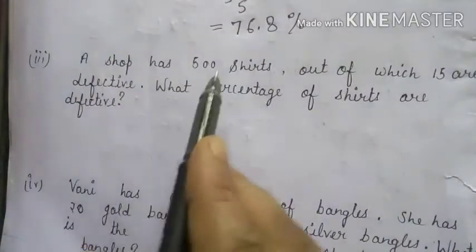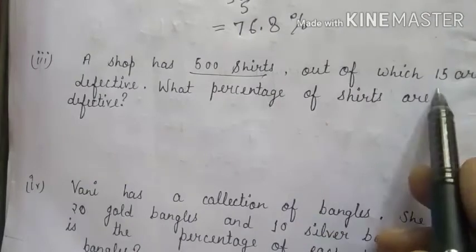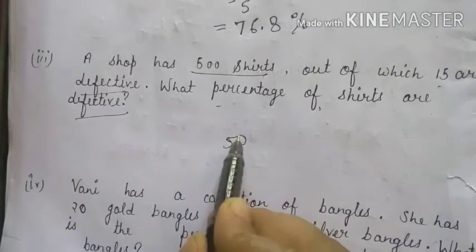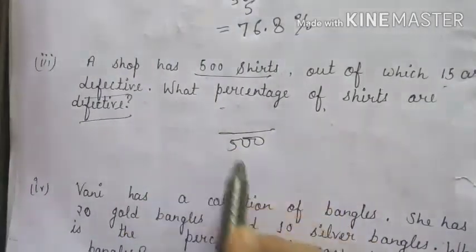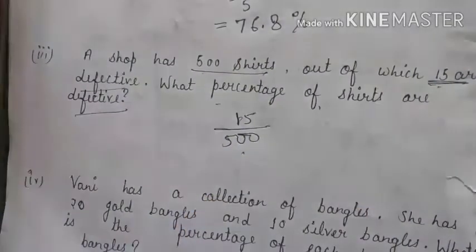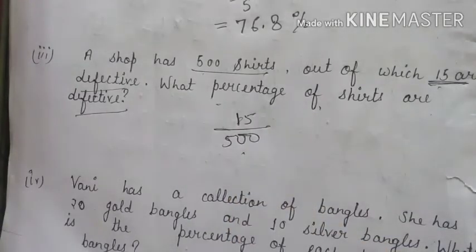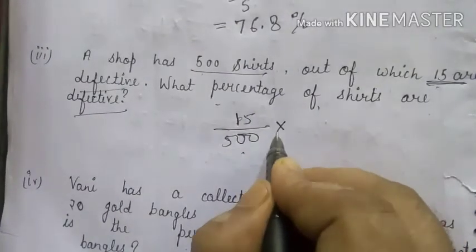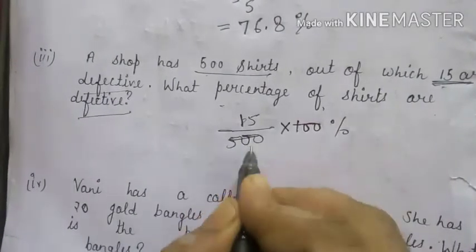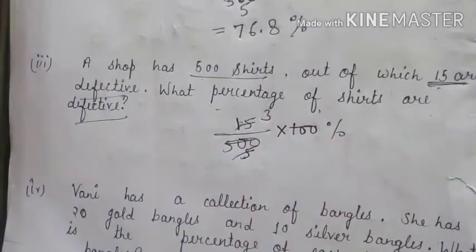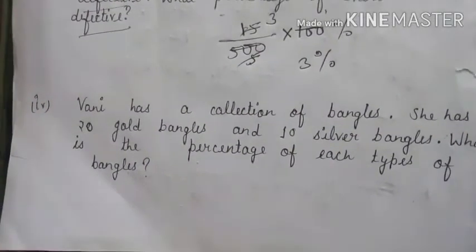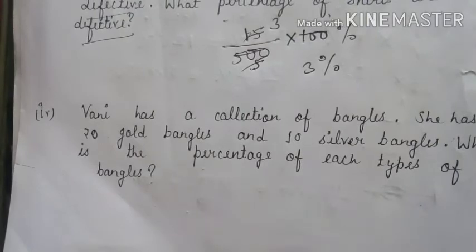Third part: A shop has 500 shirts, out of which 15 are defective. What percentage of shirts are defective? Total shirts = 500 (denominator), defective = 15 (numerator). Write as 15 upon 500, multiply by 100 percent. Cancelling 100 and 500, and 5 into 15 gives 3%. So 3% of shirts are defective.